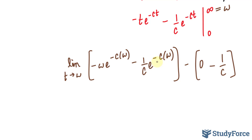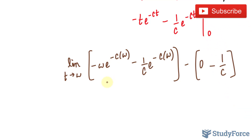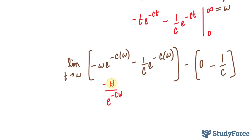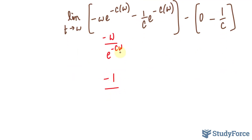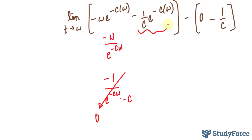Now I take the limit of these two terms as w approaches infinity. For the first term, if w goes to infinity we get infinity times infinity, so we use L'Hôpital's rule. Rewriting as negative w over e to the power of negative c w, L'Hôpital's rule gives the derivative of the top, which is negative 1, divided by the derivative of the bottom, which is e to the power of negative c w times negative c. Taking the limit, a constant over a very large number equals 0. For the second term, e to the power of a very large negative number also equals 0.